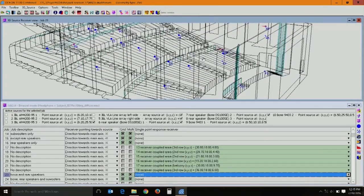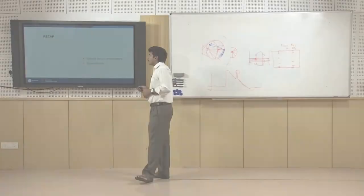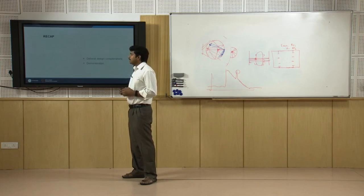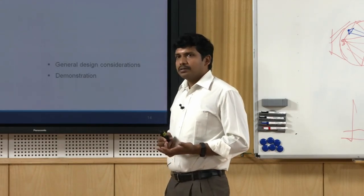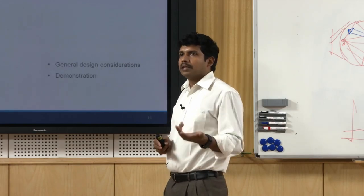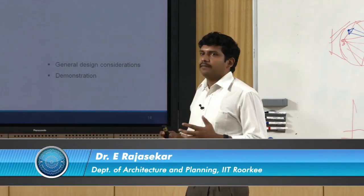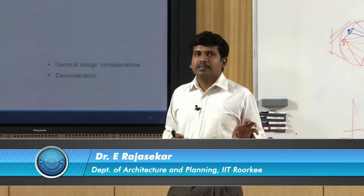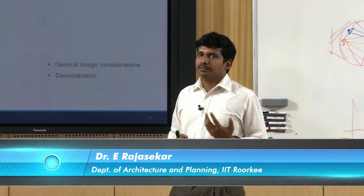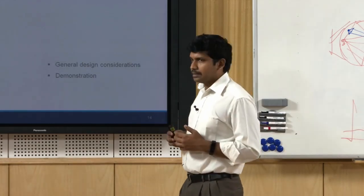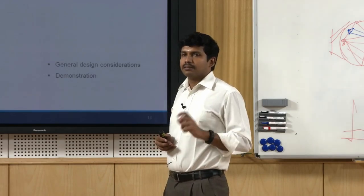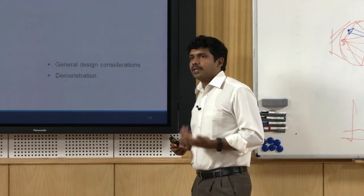To conclude this session: we looked at general design considerations, designing of acoustic reflectors and the principle behind it, common acoustic defects, and envelopment - giving an idea of where to put speakers. It is more challenging for multipurpose halls than spaces meant for just orchestra or just speech. Then we looked at the demonstration of Odeon Acoustics software through which the quality parameters and indicators were demonstrated. Taking any hall - from lecture hall and conference room to large volume auditoriums - these quality indices are critically important. Thank you.